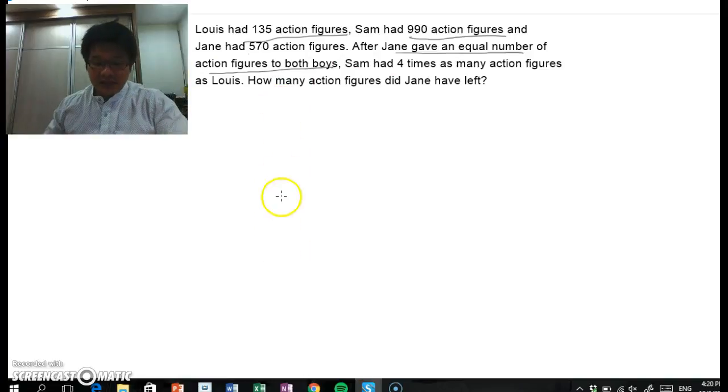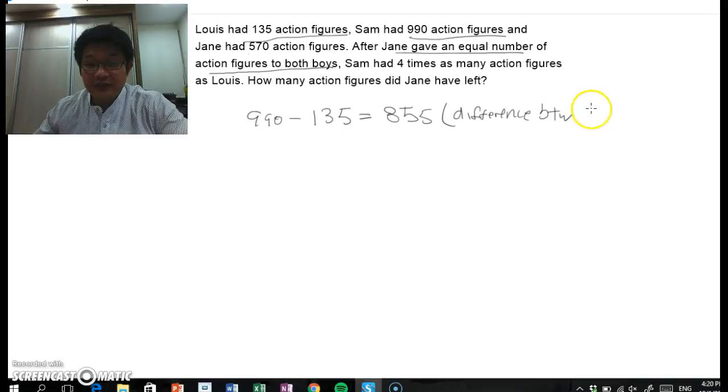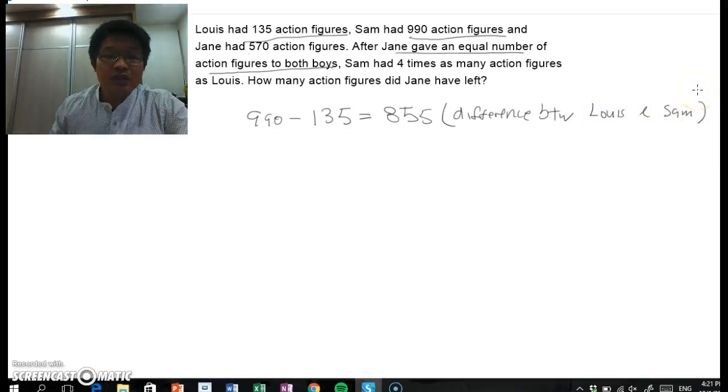So let us start by finding out what is the difference between Louis and Sam, and this difference will not change. So this is the difference between Louis and Sam, and this difference will not change. Why? Because Jane gave them an equal number of action figures. So later on they say that Sam had 4 times as many action figures as Louis.